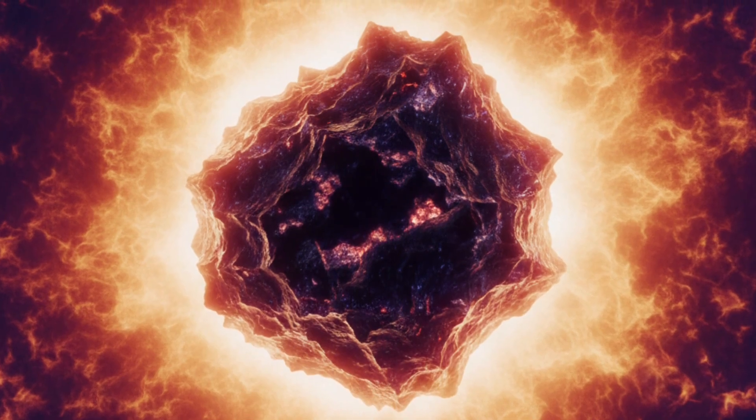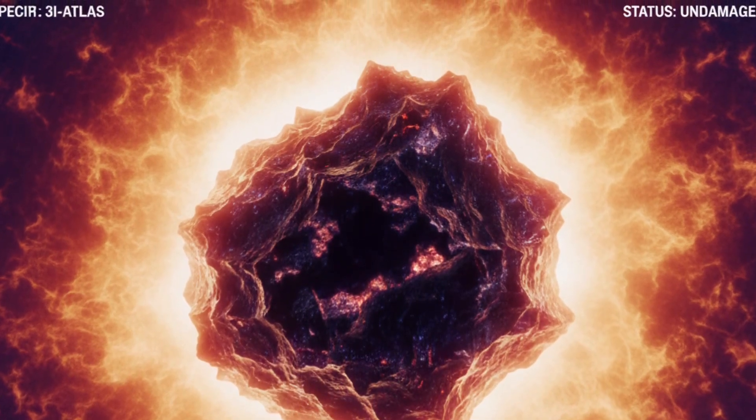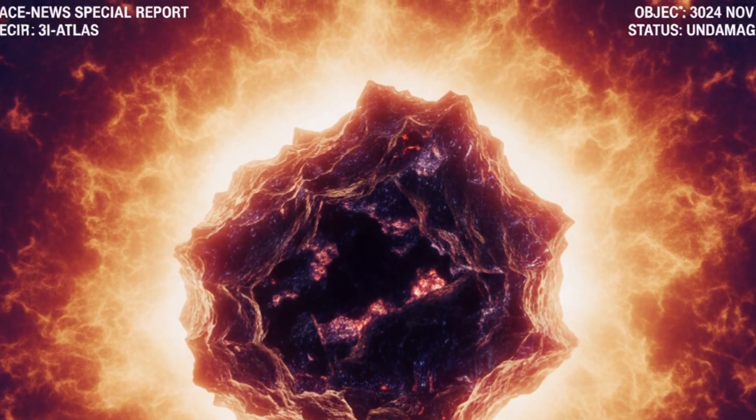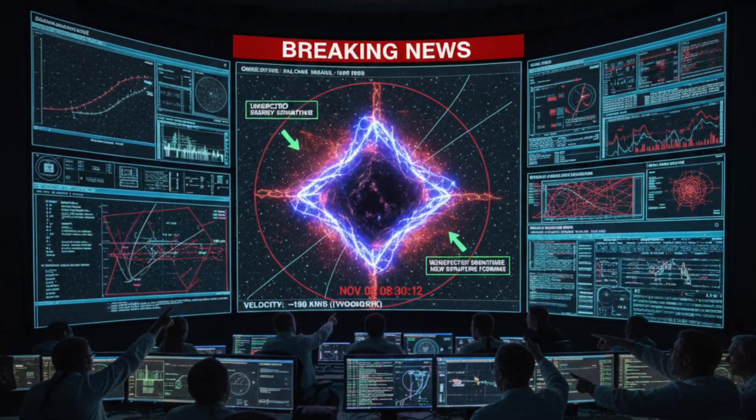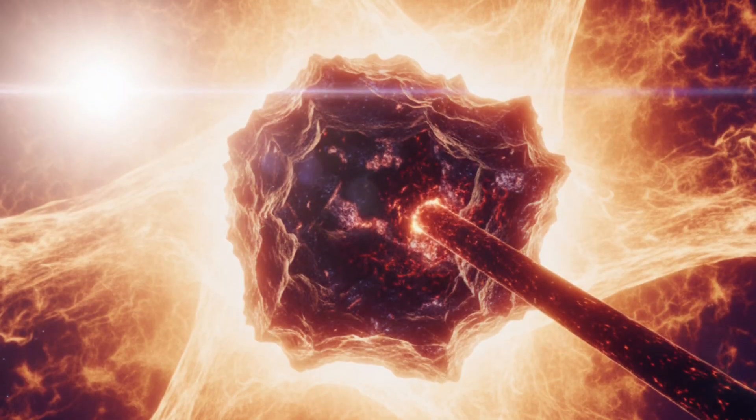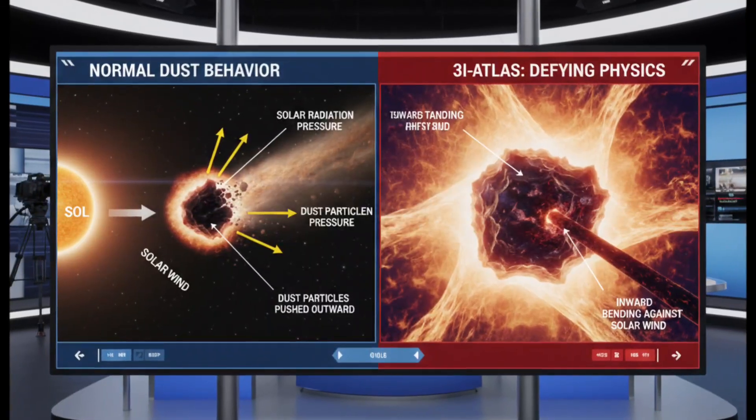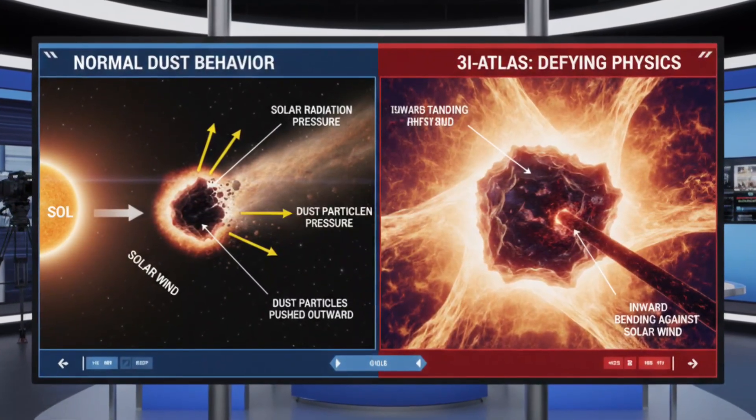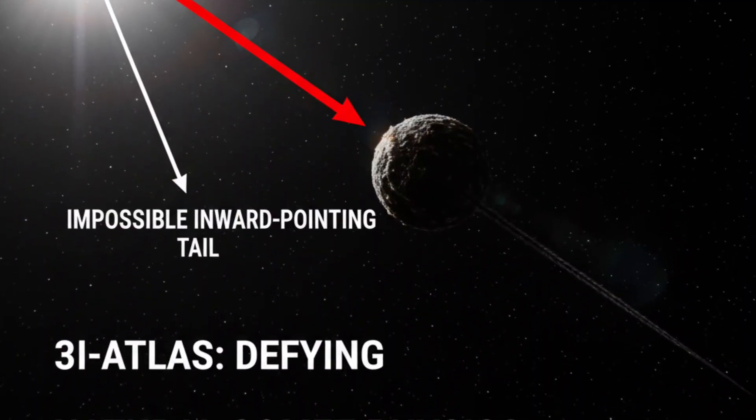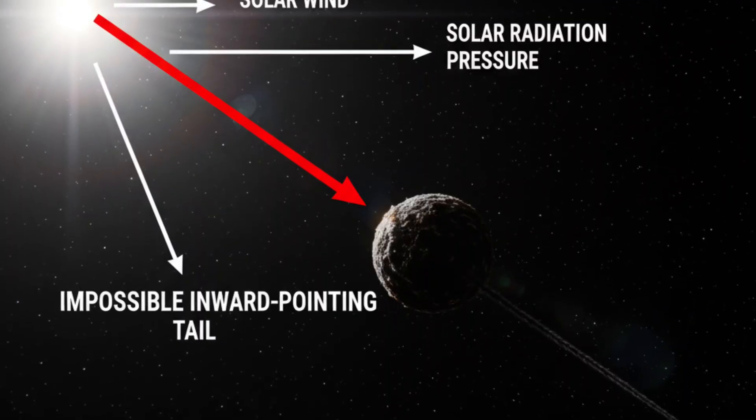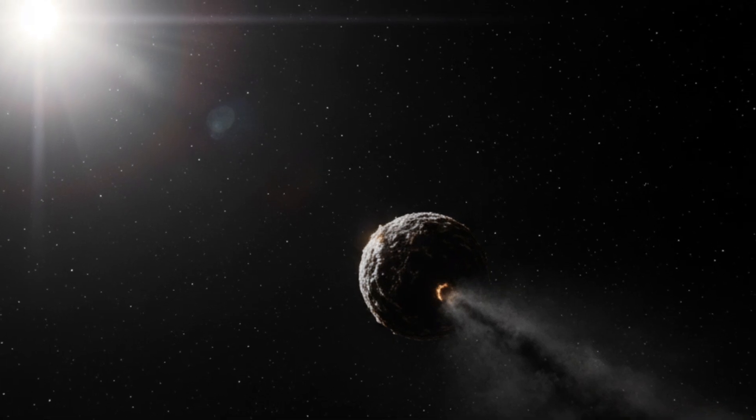The object wasn't breaking apart, it wasn't shedding material, it wasn't even weakening. It was intact, clean, sharp, and unnervingly stable. And then the shock deepened. The images revealed an anti-tail, a thin stream of material extending toward the Sun instead of away from it. That's impossible under normal physics. Solar radiation forces dust outward. Jets always flow away from the Sun. Nothing in nature produces a tail pointing inward. Yet there it was, stretching backwards like a dark signature drawn against the laws of motion.